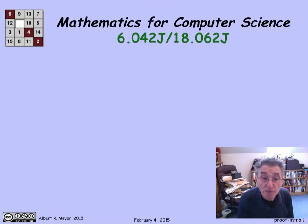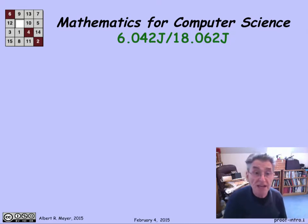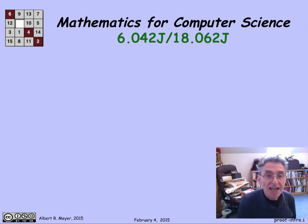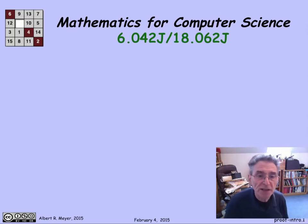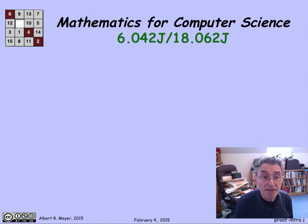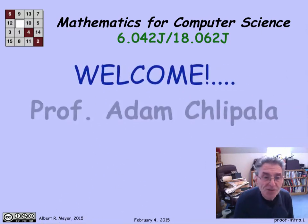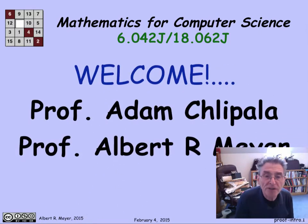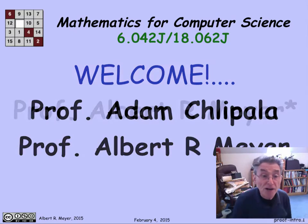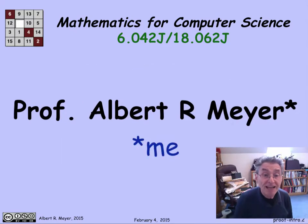This is Mathematics for Computer Science, 6042J, 18062J, a joint subject between electrical engineering and computer science and mathematics. Welcome. The instructors are Professor Adam Chipala and Professor Albert R. Meyer. And I'm Albert.